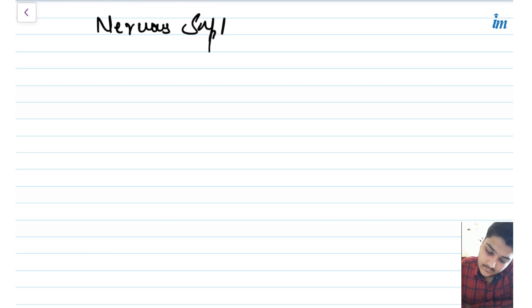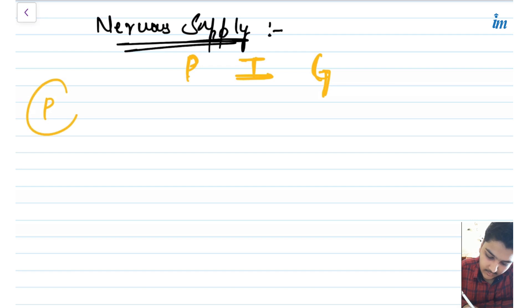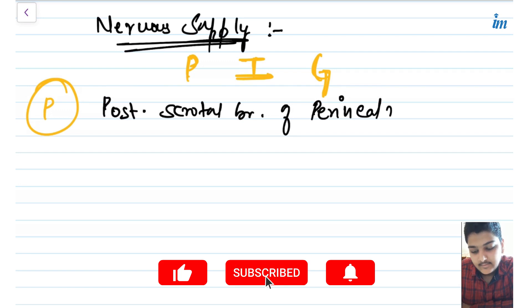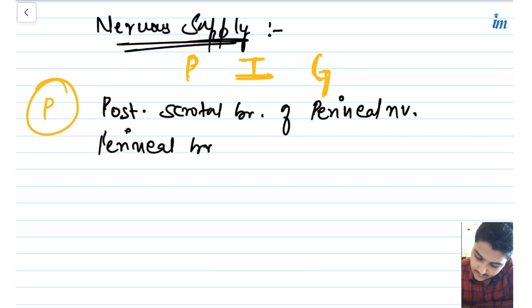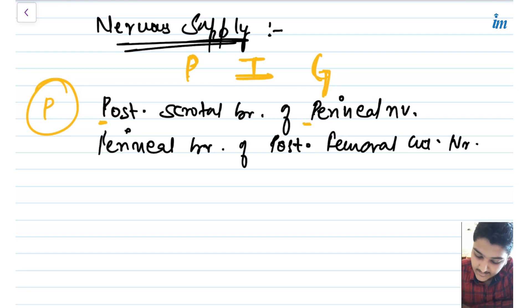Now let's talk about the nervous supply. The mnemonic I use for the nervous supply is PIG. For P, we have the posterior scrotal branch of the perineal nerve, which is itself a branch of the pudendal nerve. We also have the perineal branch of the posterior femoral cutaneous nerve — notice every word here starts with P.